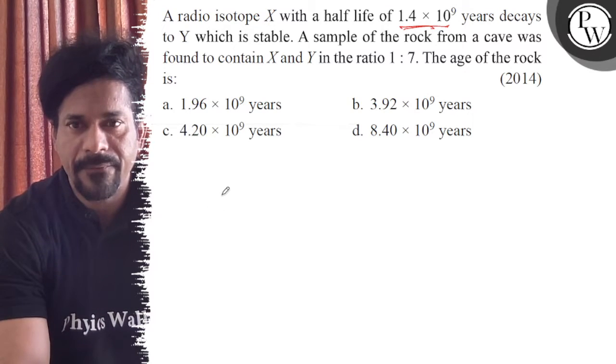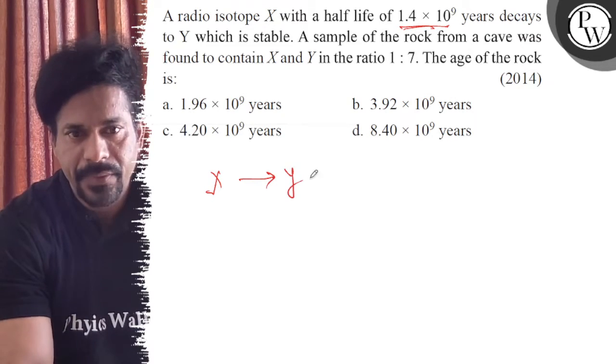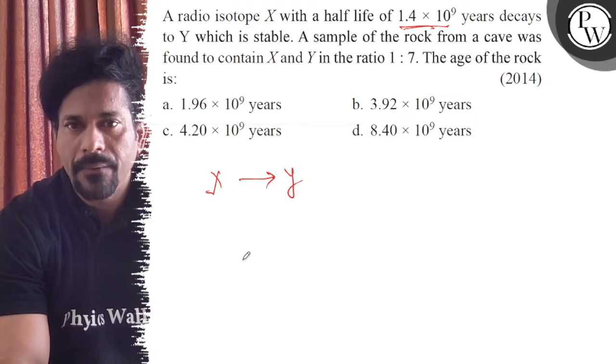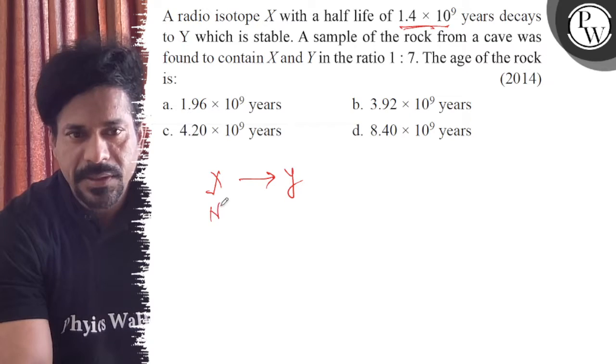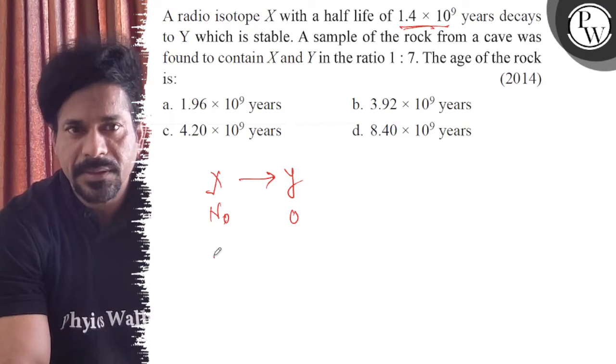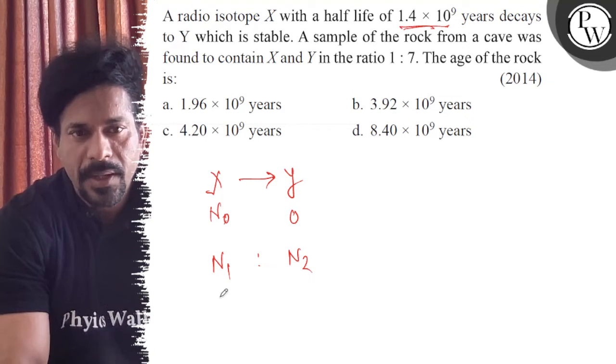So radioactive isotope X with this half-life decays to Y. A sample of rock from the cave was found. Initially there was N0, and finally there is N1 of X and N2 of Y.